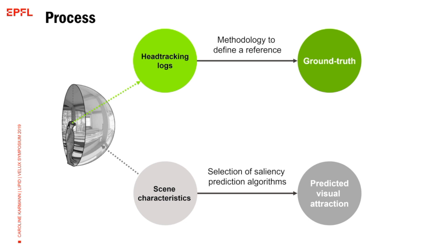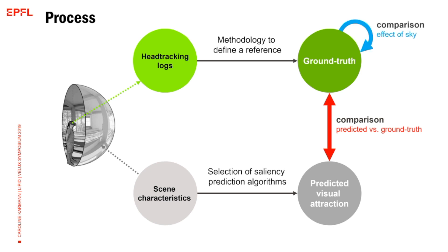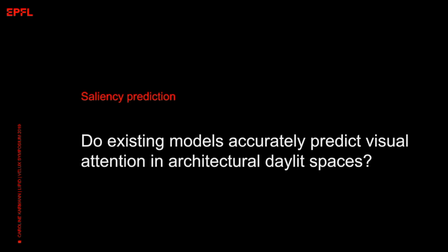In parallel, I needed to use the XYZ coordinate logs to model what I call a ground truth — representing where people have looked in the space. These two outputs were needed to drive my comparison. From there it was a lot of literature review and defining my own methodology. I could also compare the effect of sky, since my dataset was originally about comparing sky conditions — each scene is seen with two sky conditions.